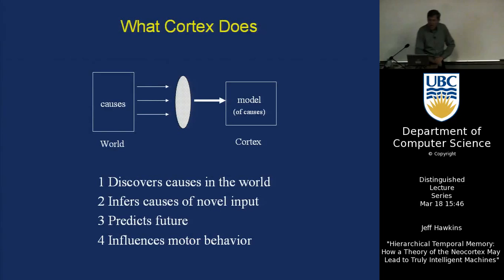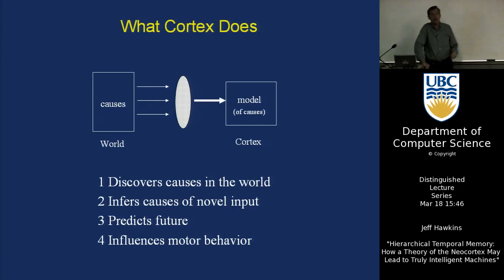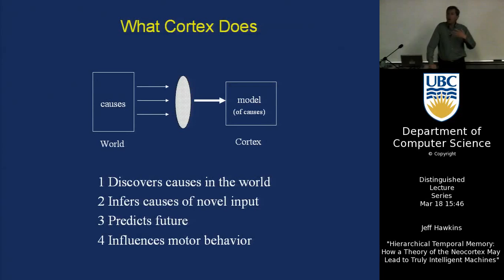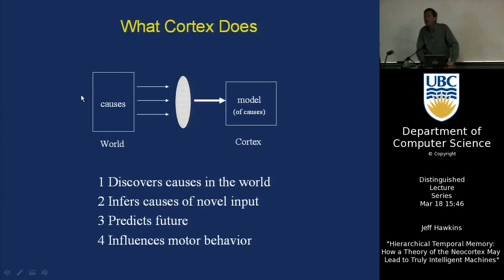We can say the cortex first discovers the causes in the world — that alone is very valuable from a machine learning point of view. Then it does inference, which is pattern recognition on novel input: a novel pattern comes in and you ask how does it match my model? Finally, you can use prediction — the cortex is constantly predicting what's going to happen next, with constant expectations about what you're going to feel, see, and hear. When you follow predictions, that's thought. I'm not going to talk about motor behavior today, although some people in the audience would really like that.